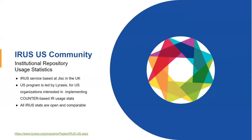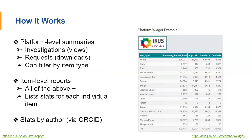IRIS stands for Institutional Repository Usage Statistics, and it's a service that's based at JISC in the UK. Only just within the last few years, US institutions can use the IRIS service through LYRASIS and the IRIS US Program. IRIS provides platform-level stats as well as item level, so you can look at aggregates or individual items, and you can see views and downloads.